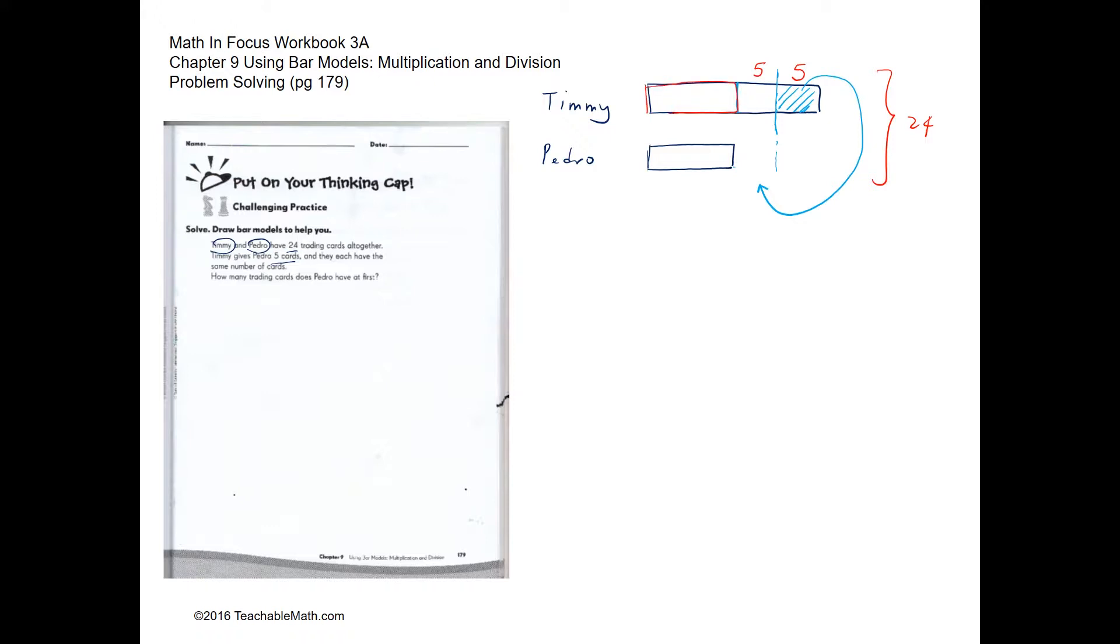I'm going to define this as one unit and this is one unit. So what is the expression here? Two units will be equals to 24 take away five.